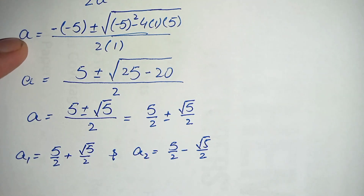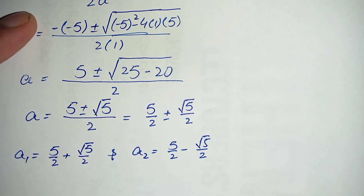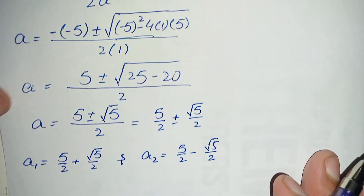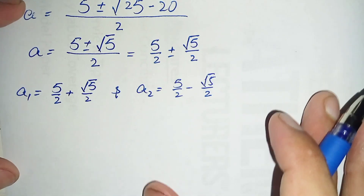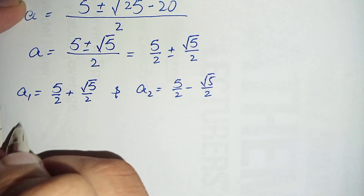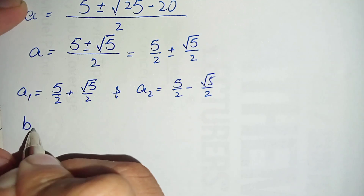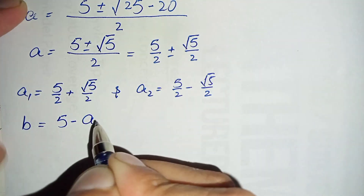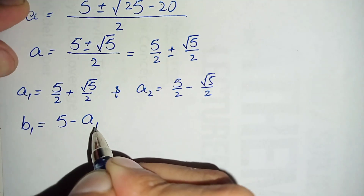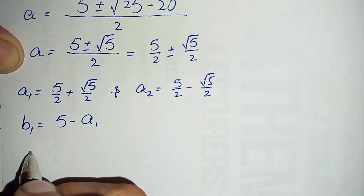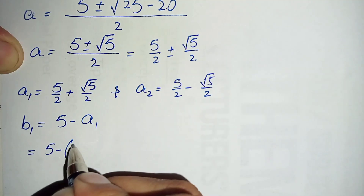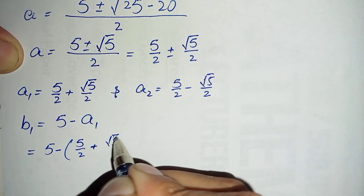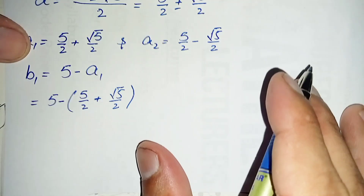Now we find the corresponding values of b by substituting these values of a into equation number three, which is b equals 5 minus a. For b₁, we substitute a₁ to get: b₁ equals 5 minus (5/2 plus square root of 5 divided by 2).